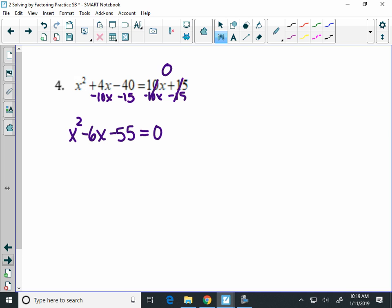Now I have a trinomial set equal to zero that I'm going to factor. To factor this, since there is no GCF, I'm going to use split the middle. There's a 1 in front, so I'm going to multiply the 1 and the negative 55. I need to find two numbers that multiply to negative 55 and add to negative 6. Since I'm multiplying to be a negative, I'm going to need one positive and one negative number.